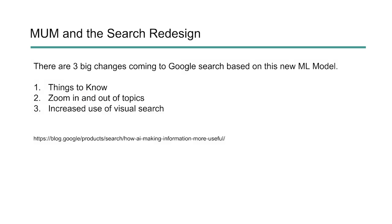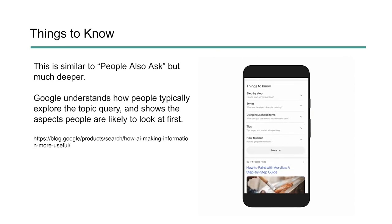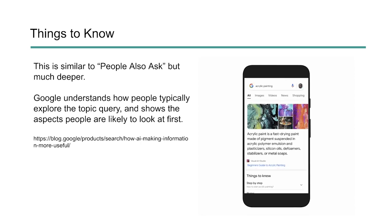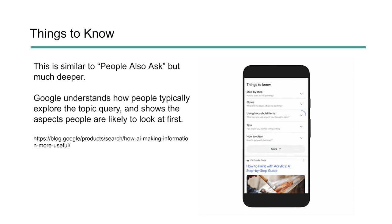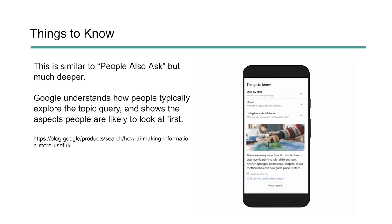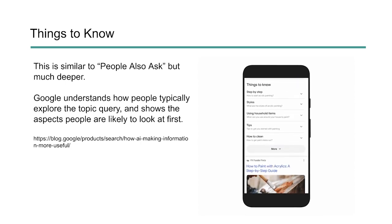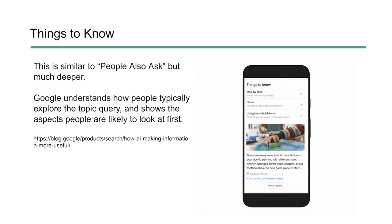So how is MUM going to impact search? They're going to be doing a redesign of search based on the learnings and capabilities of MUM. There are three big changes coming to Google Search: 'Things to Know,' the ability to zoom in and out of topics, and an increased use of visual search. 'Things to Know' looks similar to 'People Also Asked' but it's much deeper. Google now has a much deeper understanding of how people explore a specific topic and will show the aspects people are most likely to look at first — step-by-step instructions, guides, styles, tips, and more.